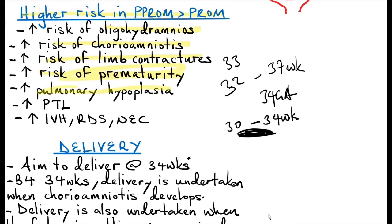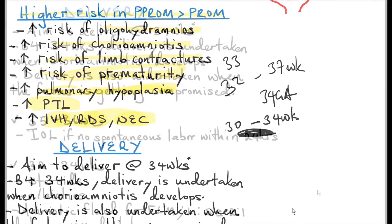There is also risk of pulmonary hypoplasia, both because of oligohydramnios and because patients may go into preterm labor before fetal lung maturity has occurred. Additional complications include increased intraventricular hemorrhage, respiratory distress syndrome, and necrotizing enterocolitis, all related to prematurity.